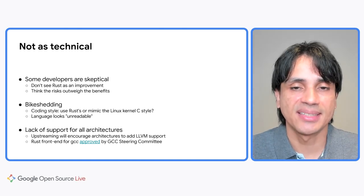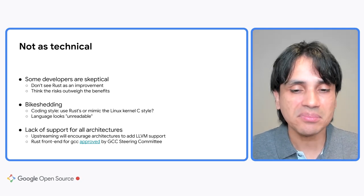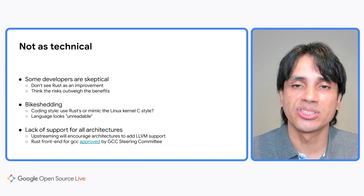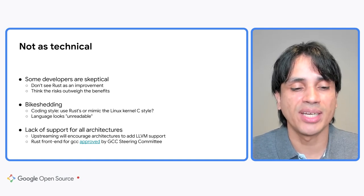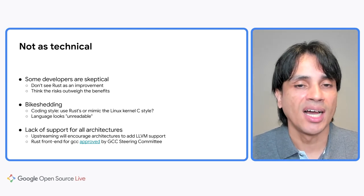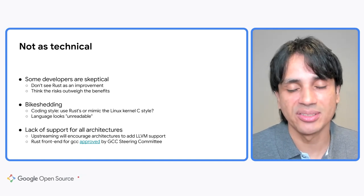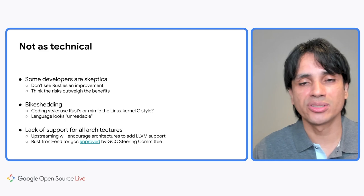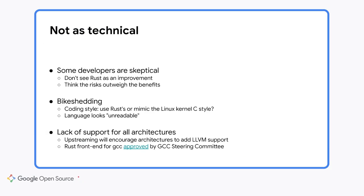The last non-technical challenge is the lack of support for all architectures. The kernel supports lots of architectures, but LLVM doesn't support all of them. We're addressing this on several fronts. One of them is a GCC front-end for Rust, which has been approved by the GCC steering committee. Once it's ready, it will give us the ability to use GCC, which supports all the architectures that the kernel supports. We also feel that once this is upstreamed, the owners of these architectures will have an incentive to work with the LLVM community to add support to LLVM backends, such that architectures will be automatically supported in kernels compiled with Rust.